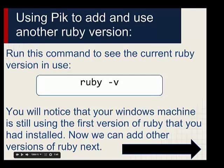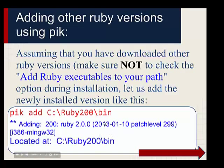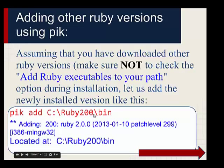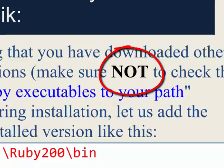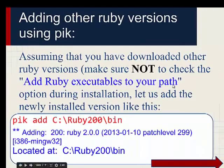In the next step we'll see how to add more versions to pik so we can manage them. I assume you've downloaded the versions you need. I downloaded Ruby 2.0 and followed all the installation instructions. Make sure you do NOT check the box that says 'add Ruby executables to your path' — that will prevent two versions of Ruby conflicting in the path at the same time. After installing another version of Ruby, type: `pik add C:\Ruby200\bin`.